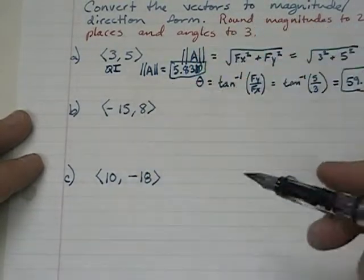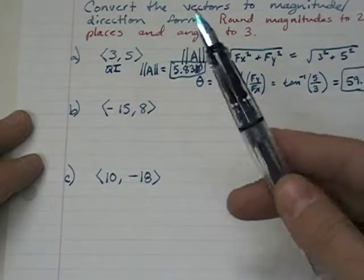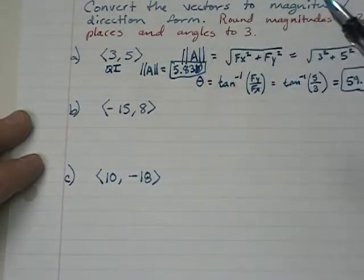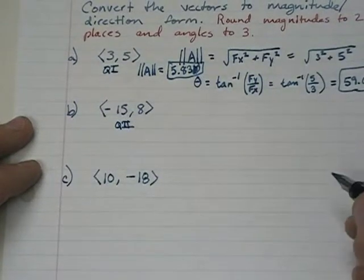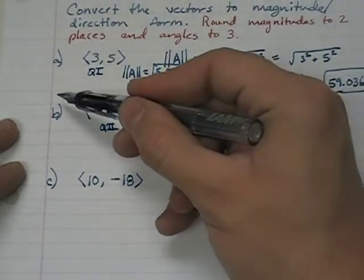x is negative, y is positive. So that means you're going to go to the left and up, which is going to put us in quadrant two. And that's going to become important in part b here.